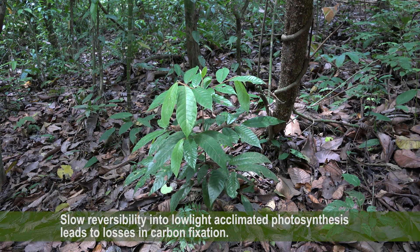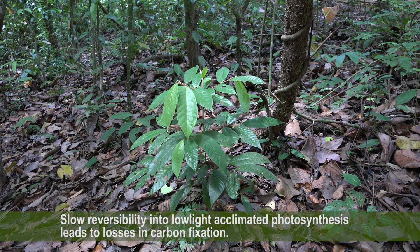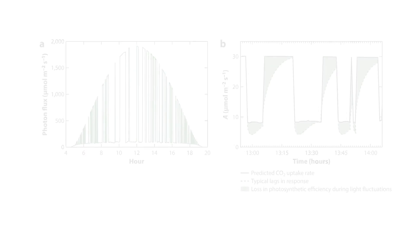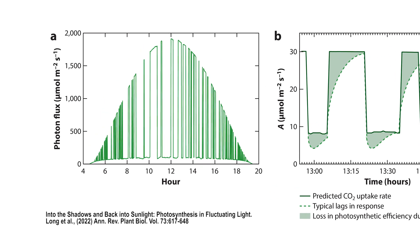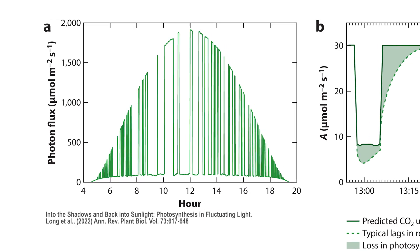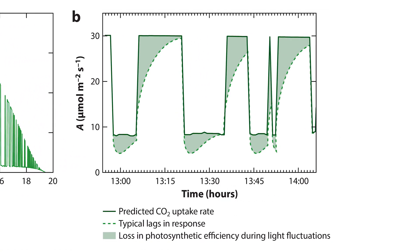Slow reversibility into low-light acclimated photosynthesis leads to losses in carbon fixation. Shown here is a profile of daily fluctuation of light within the canopy. A section of the light profile is expanded to show the photosynthetic losses during light fluctuations. Dashed lines represent the response lags, and the area between the solid and dashed lines represents the reduction in photosynthesis.